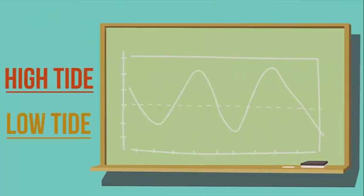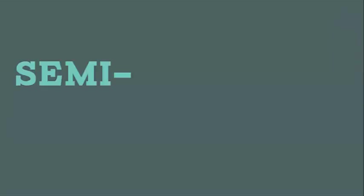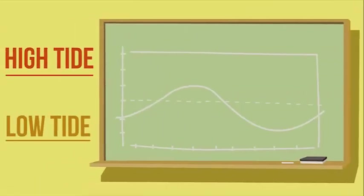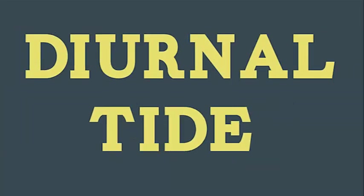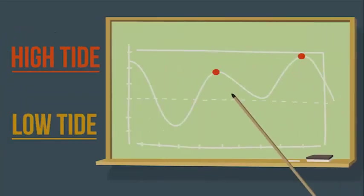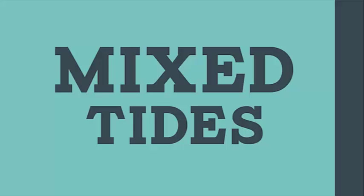That's why some places have two high tides and two low tides every day with an equal tidal range in between. This is called a semi-diurnal tide. And other places have only one high tide and one low tide a day, known as a diurnal tide. And still other places have one or more high or low tides with unequal tidal ranges for each. These are called mixed tides. Remember how I said the sun also has a bit of a role to play in this whole tide thing?